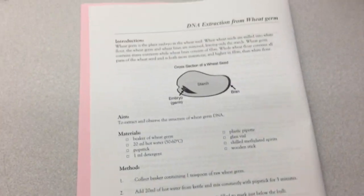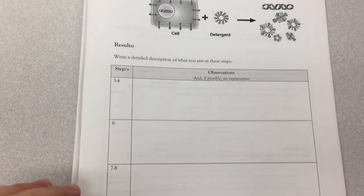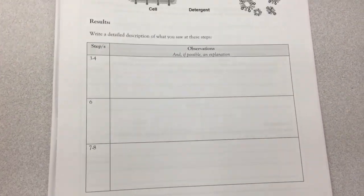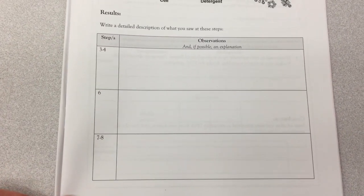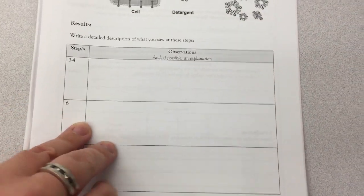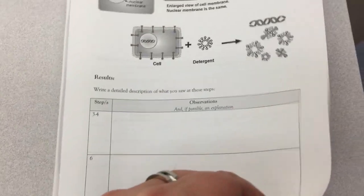So that's the extraction of DNA from wheat germ prac. In your prac booklet, or in your notes if you're at home at the moment, you can write down some observations of what you saw me do at each of the steps. And then there are some questions that you can fill in, which your teacher can provide you on canvas or you can just pause this and write individually.